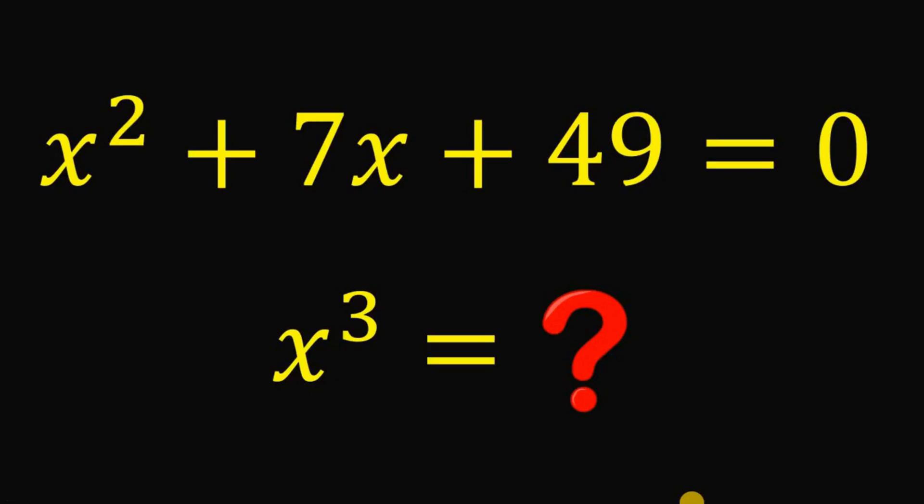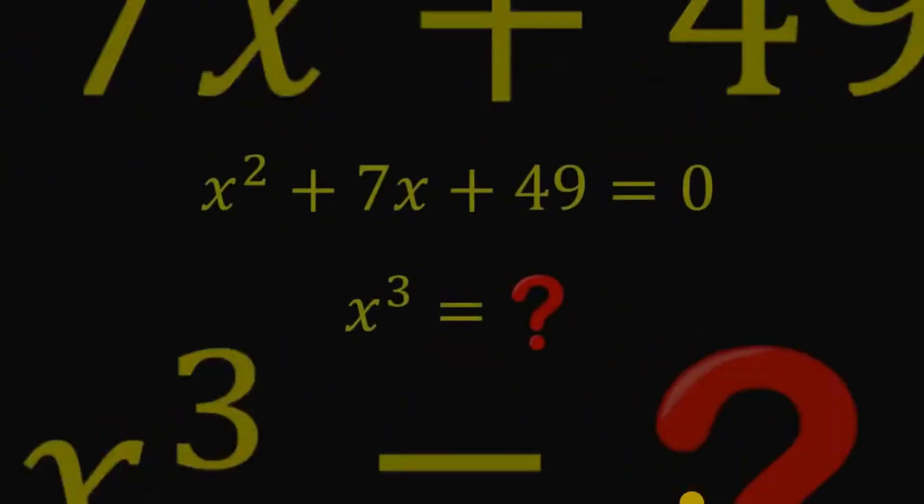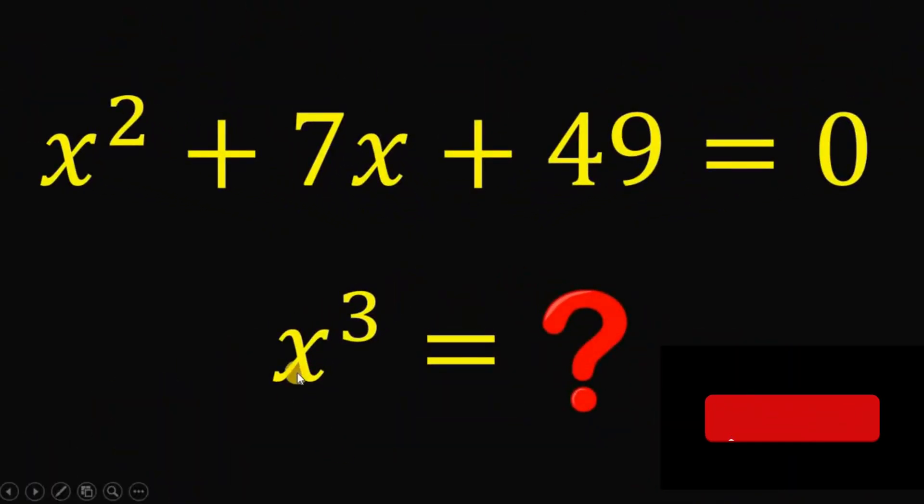Can you solve this math challenge? Here's the question. Solve for the value x cubed given that x squared plus 7x plus 49 equals 0.